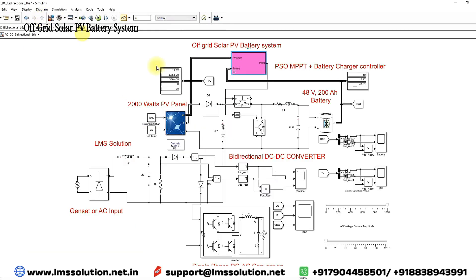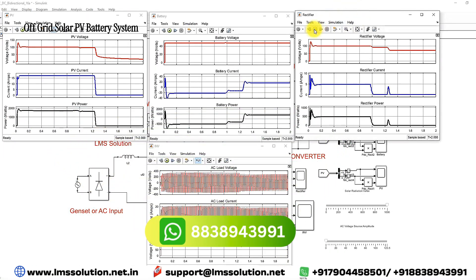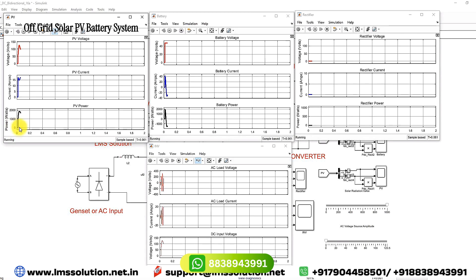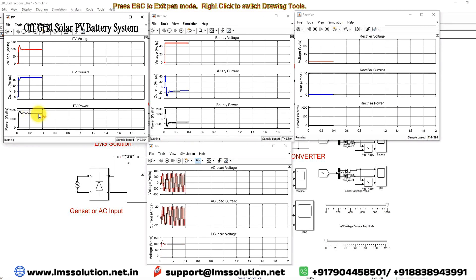First, I am going to explain this system with the solar PV having power. I am going to make the irradiation equal to 1000. Here you can see that because of high irradiation, the solar is generating power. The voltage of the PV is around 100 volts, PV current is around 16 amps, and PV power is around 700 watts. Here you can see the battery voltage, battery current, and battery power.